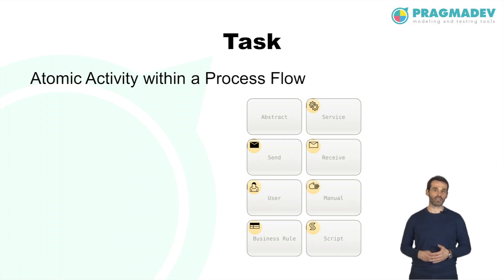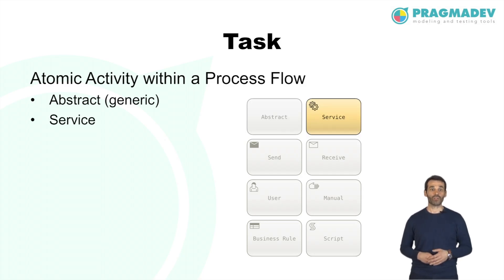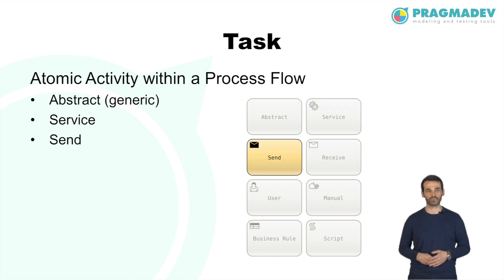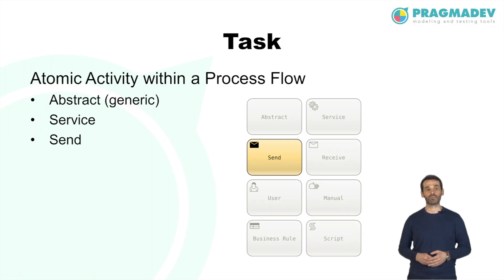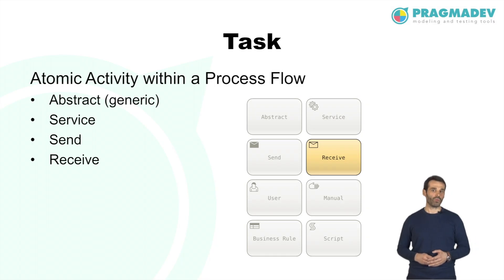There are different types of tasks identified by a marker at the top left. A task without a marker is called an abstract task — it is a generic task. A service task uses some sort of service, such as a web service or automated application. A send task is designed to send a message; once the message has been sent, the task is completed. A receive task will wait for a message to arrive; once received, the task is completed.